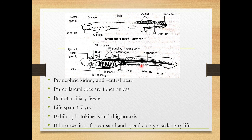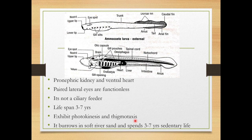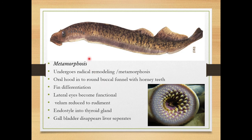After many years, scientists discovered that the Ammocoetes larva is actually the larval form of Petromyzon. The lifespan is about three to seven years. The larvae exhibit photokinesis, which is a response towards light, and thigmotaxis, which is a response to touch. It burrows in soft substratum and spends three to seven years of sedentary life.